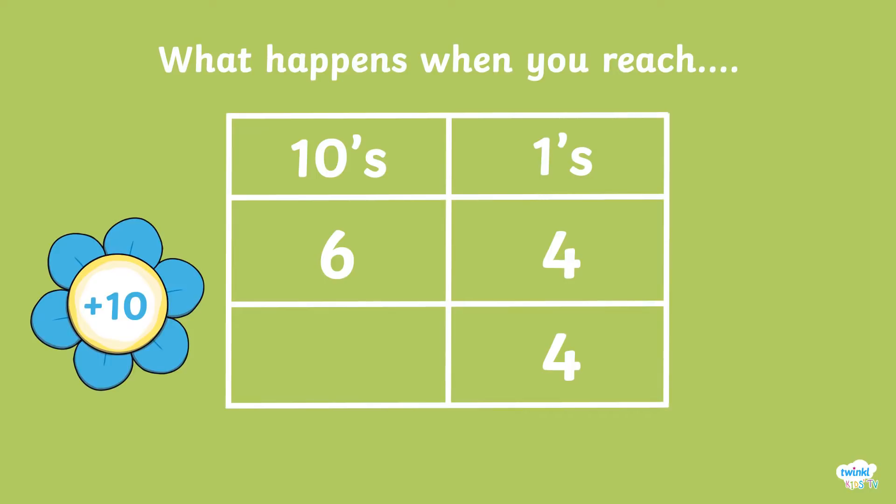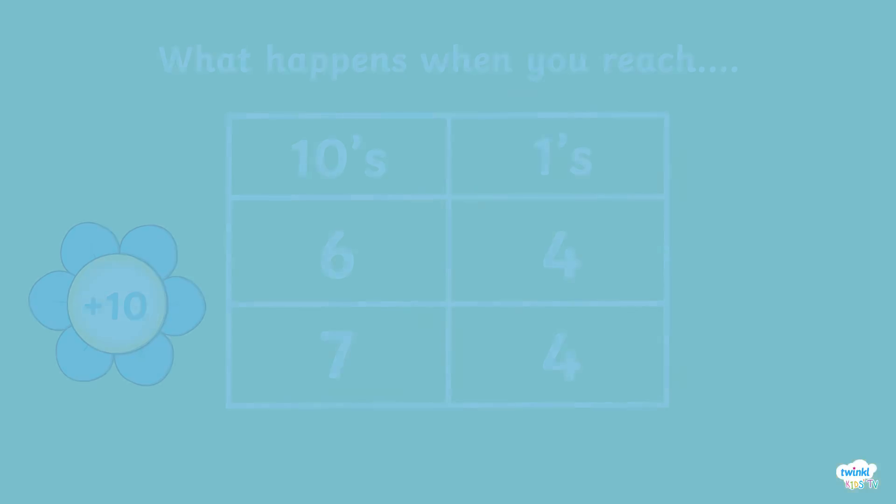Because we are adding an extra 10, the 6 now becomes 7 because we will have 7 lots of 10, which is 70. So the answer is 74.